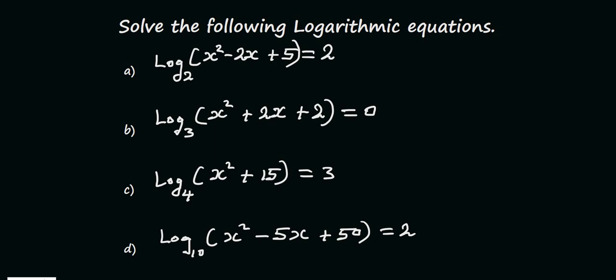Over here we have a couple of questions and we'll be looking at them one after the other. The question says: solve the following logarithmic equations. Question A: log(x²-2x+5) to base 2 is equal to 2. Question B: log(x²+2x+2) to base 3 is equal to 0. Question C: log(x²+15) to base 4 is equal to 3. And finally, Question D: log(x²-5x+15) to base 10 is equal to 2.